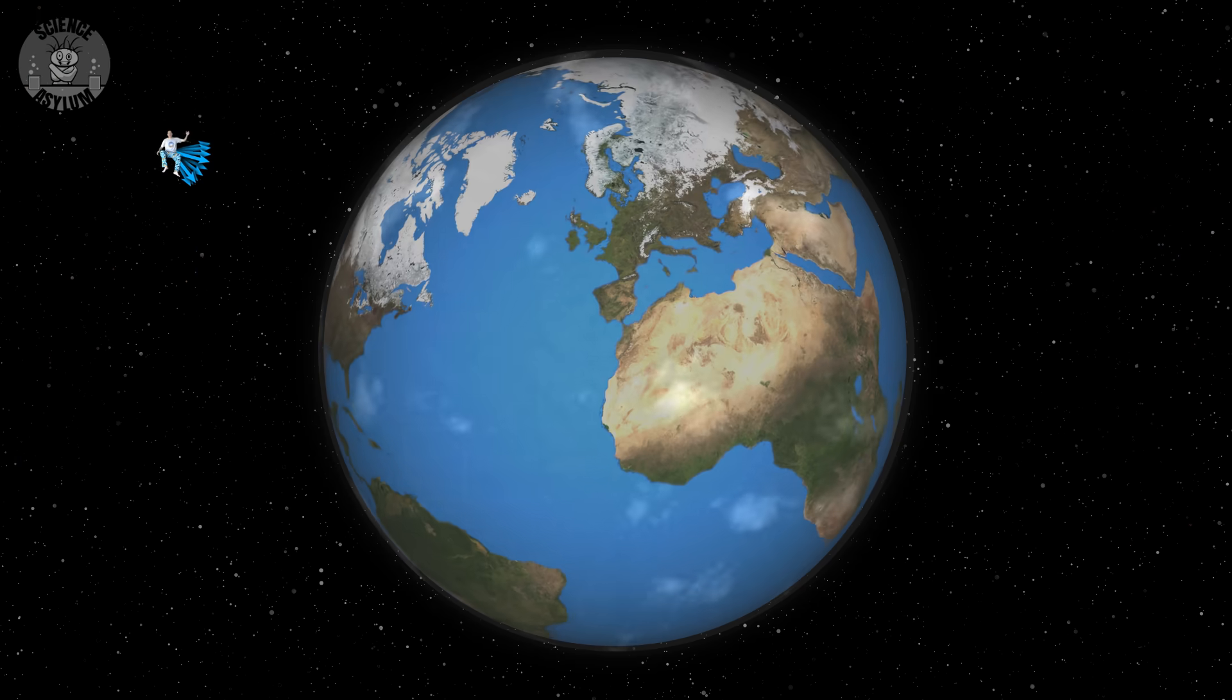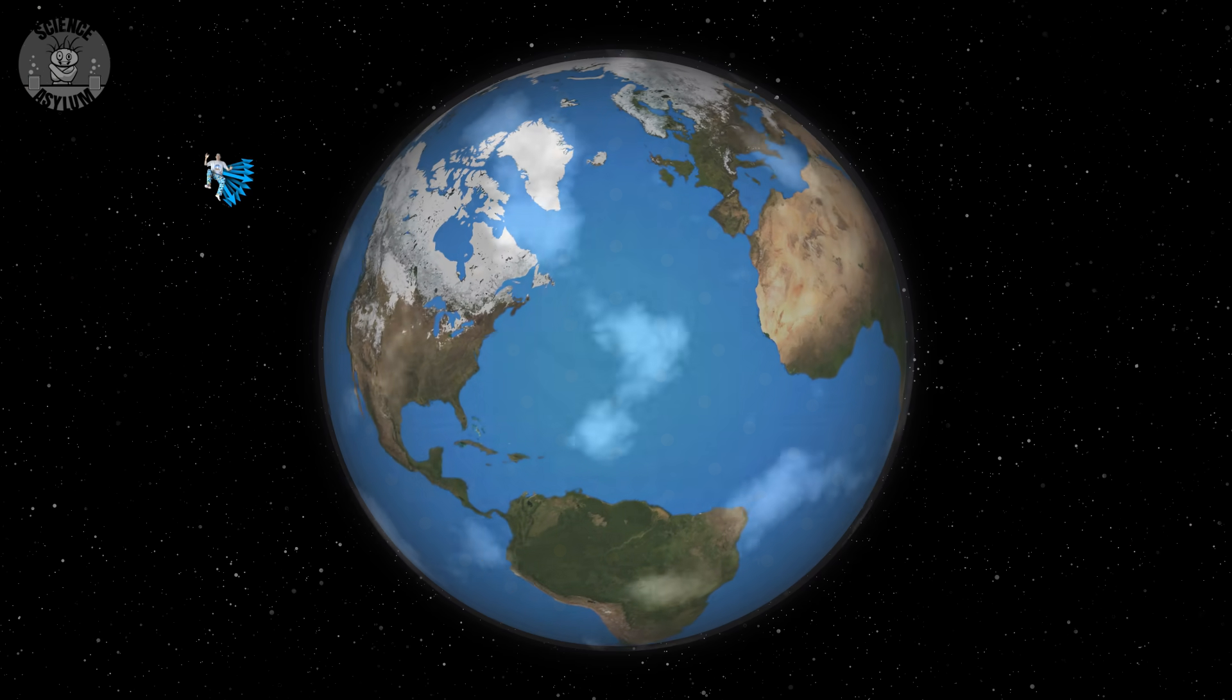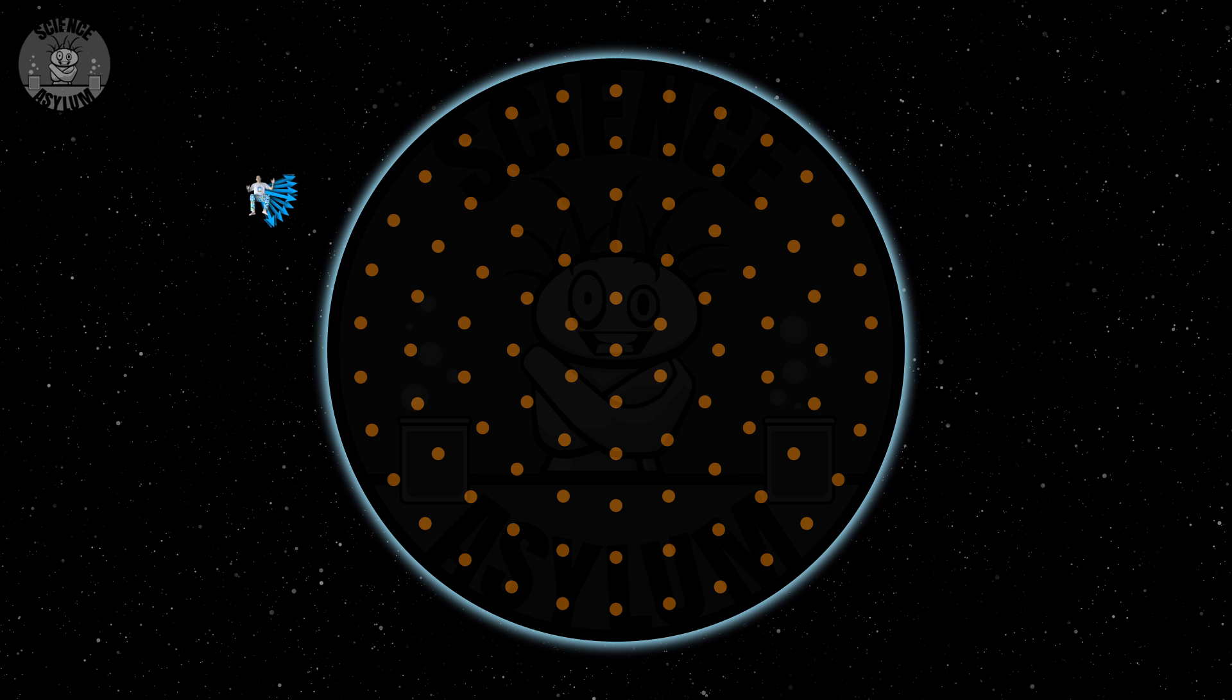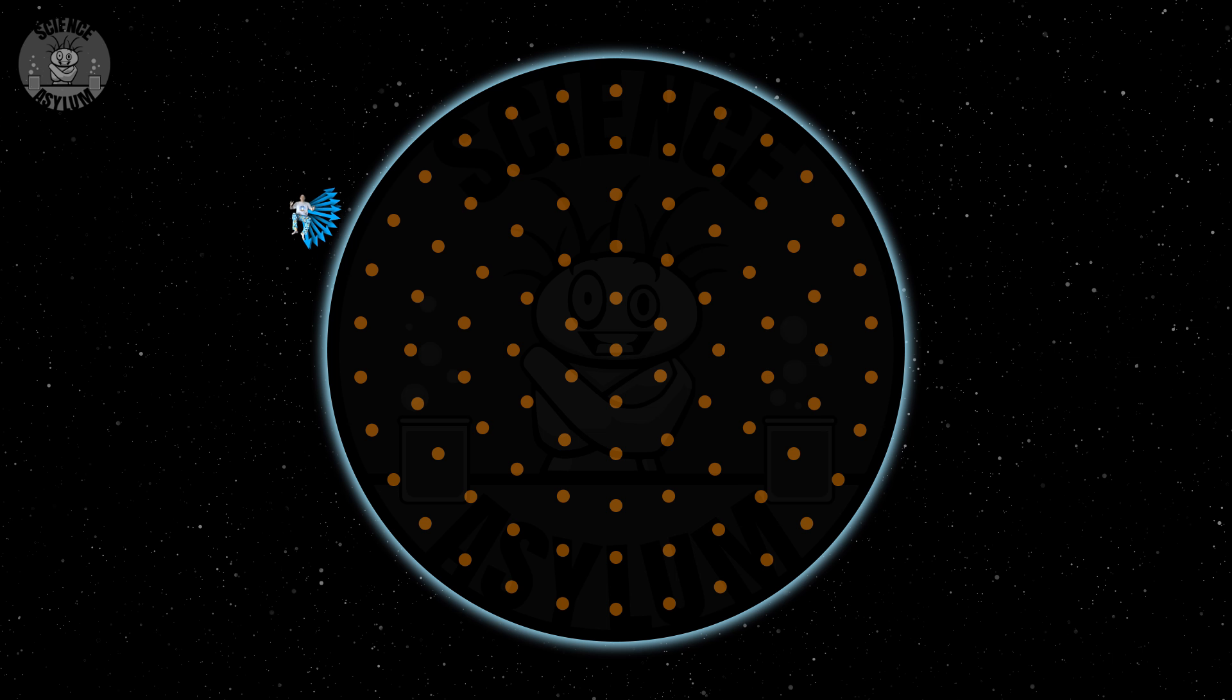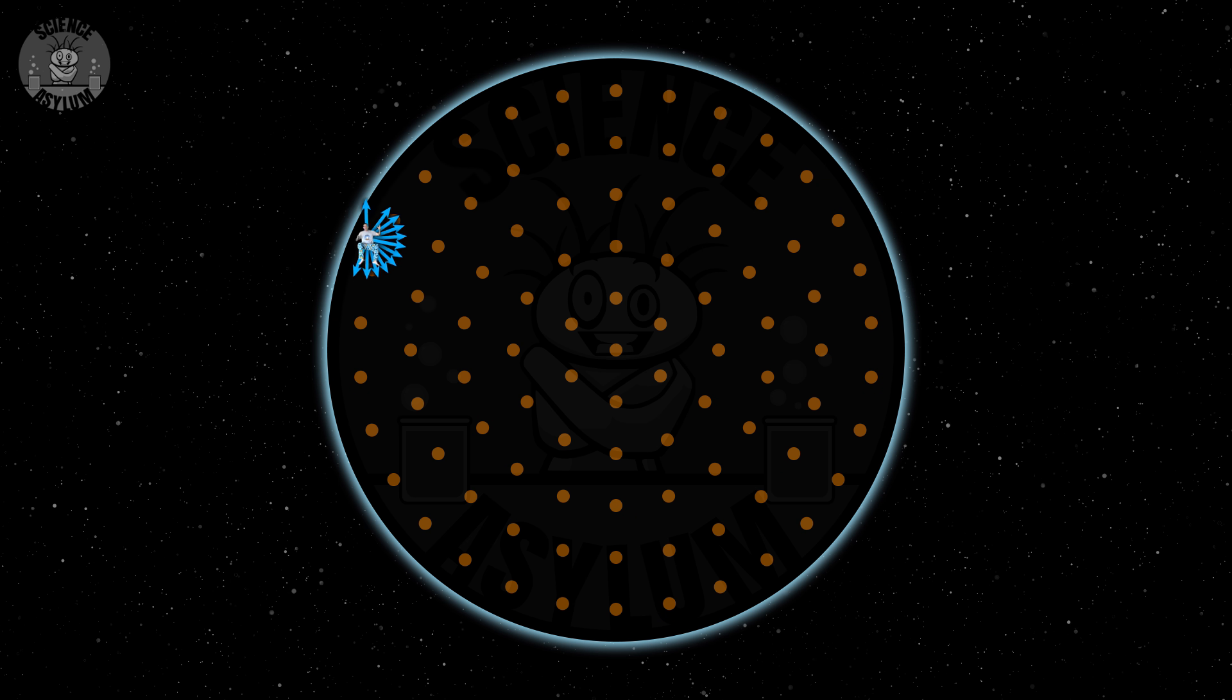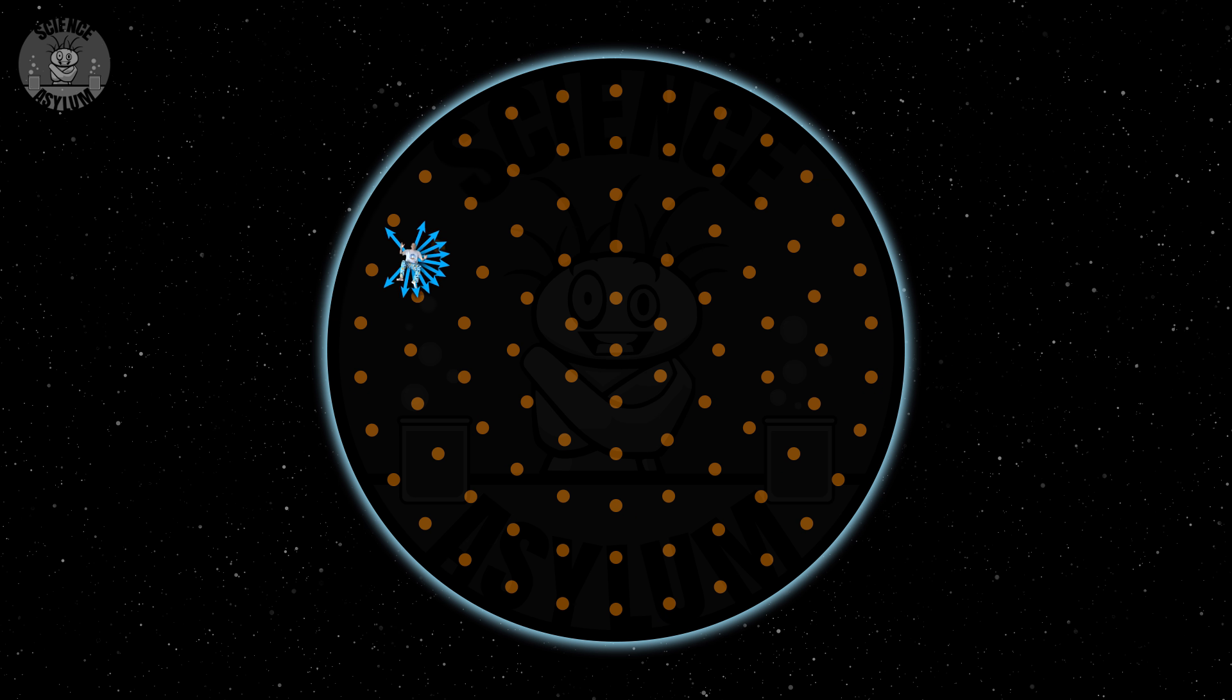In reality, though, a separate gravity comes from every tiny particle that makes up the Earth. Remember, everything with mass attracts everything else with mass at all times. A falling person is being attracted toward every particle in the Earth. When they're outside the Earth, all those particles are underneath them. But once they're inside, some of those particles are above them.